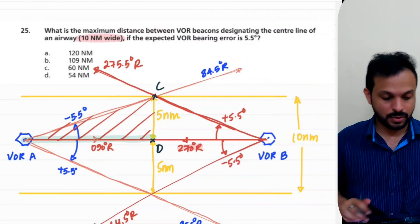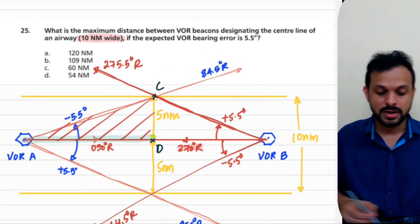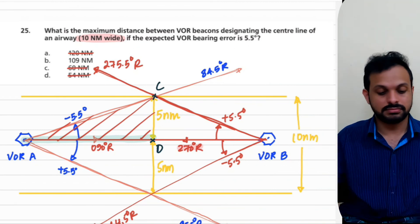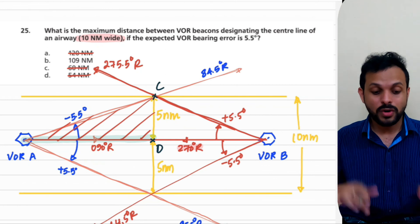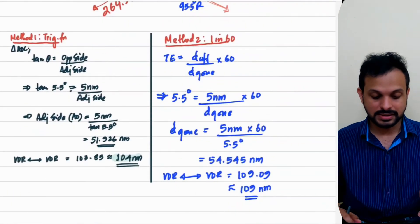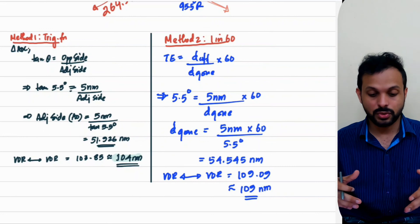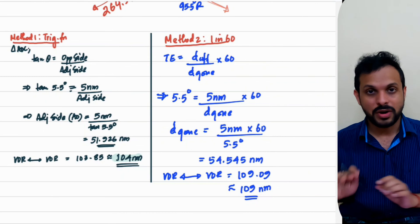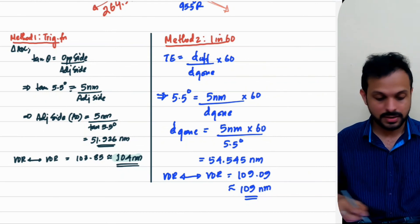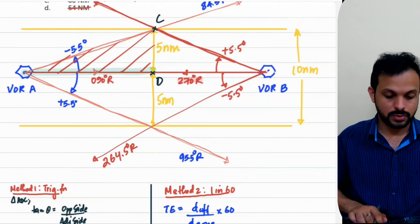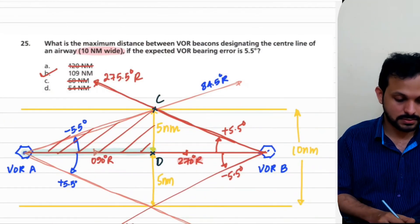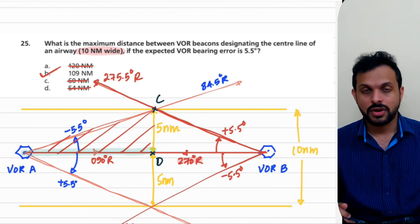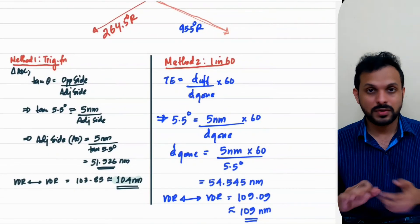Let's look at the options, because that defines what to choose. We have options of 120, 60, and 54 — all clearly not matching. The only option close to our two calculated values is 109 nautical miles, which matches the 1-in-60 result. In such cases where there's no clash and 1-in-60 gives you a matching option, just go with that. So 109 is the answer.